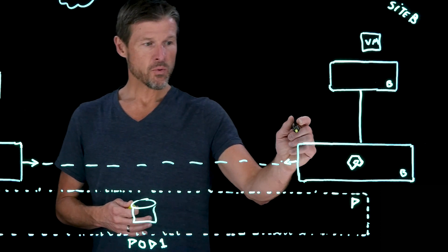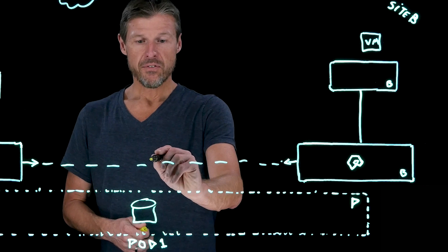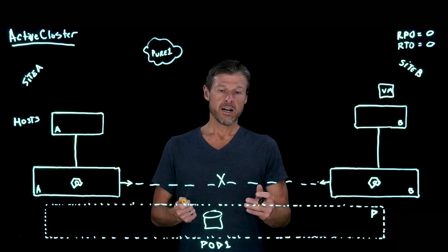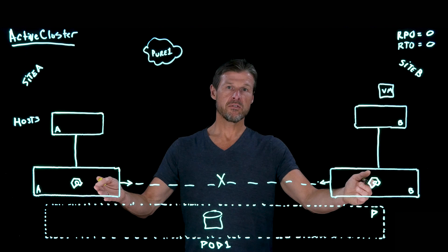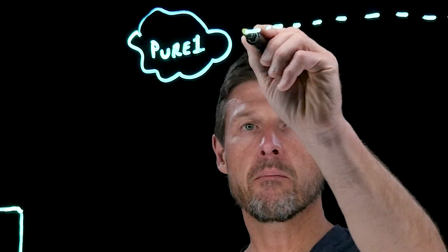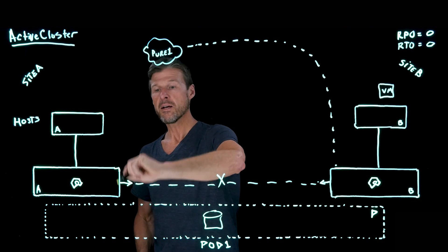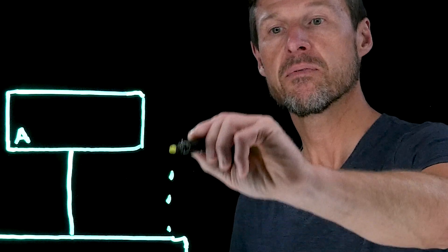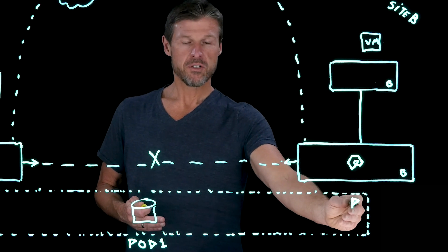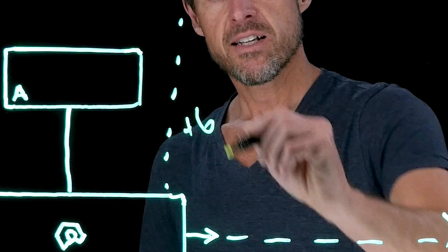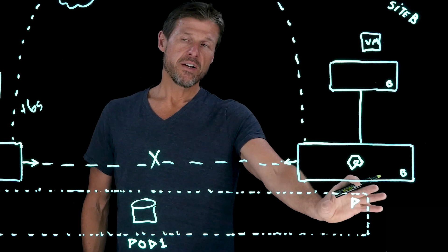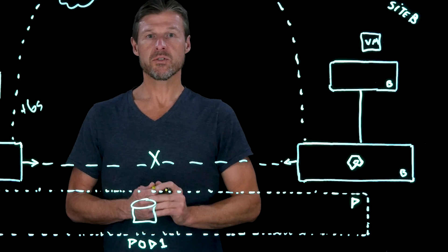So how does that work? If the link between the two flash arrays — the replication links — fail or get cut, each of the two flash arrays recognizes that and performs what we call a mediation race. Flash array B does its race over the management network out to the Pure One cloud mediator. Flash array A does the same thing, but because we've set this preference, flash array A gets a six-second delay added to its race, which gives a huge advantage to flash array B, almost guaranteeing that it's going to win this race.